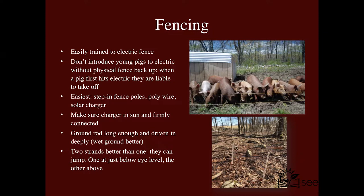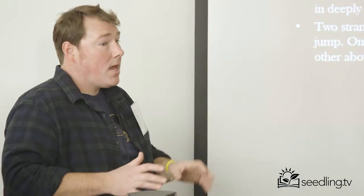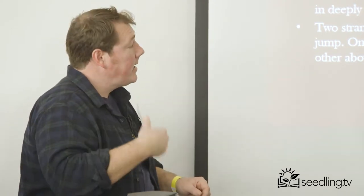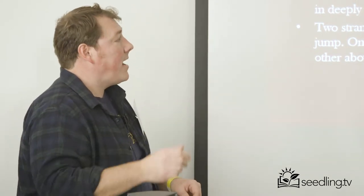If you're introducing young pigs to the electric fence, though, you need to have a physical barrier around them because one of the first things that'll happen is they'll hit that electric fence, not know what the hell's going on, and just take off. And they'll go through the fence, and they'll end up on the other side of town before you know it.